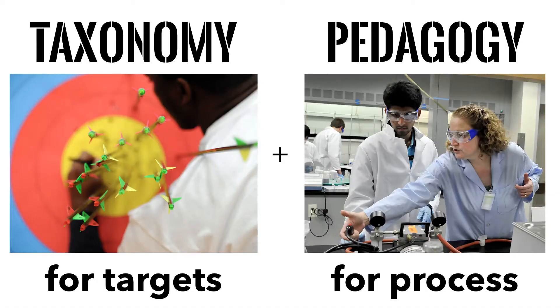So you can see both taxonomies — both Bloom's and Krathwohl's — and both of these are design tools for learning objectives. Now you can see how they both can be coupled to the Keen learning outcomes.